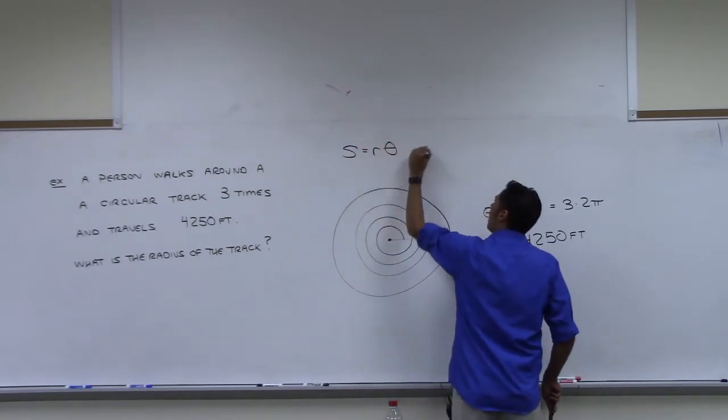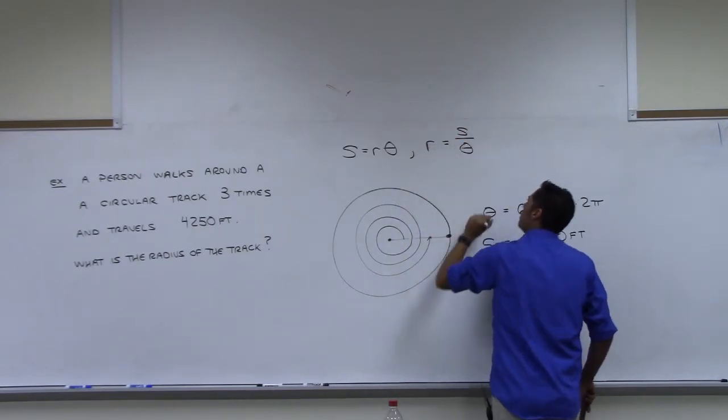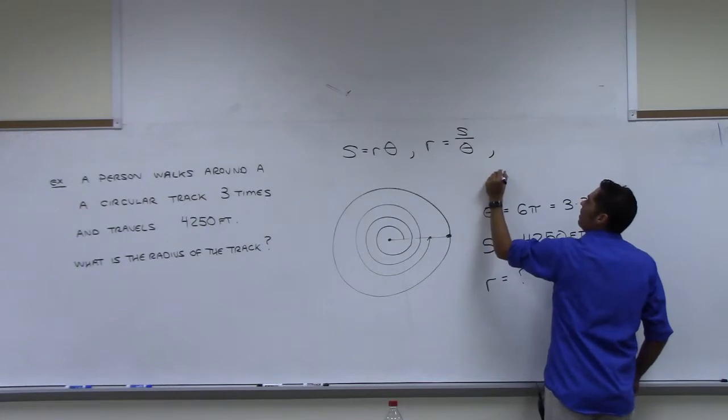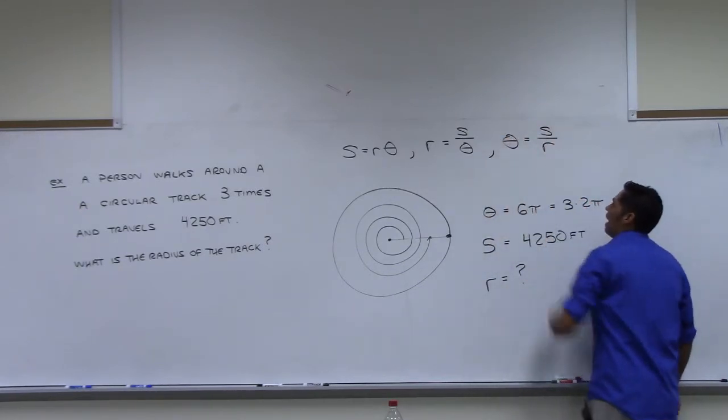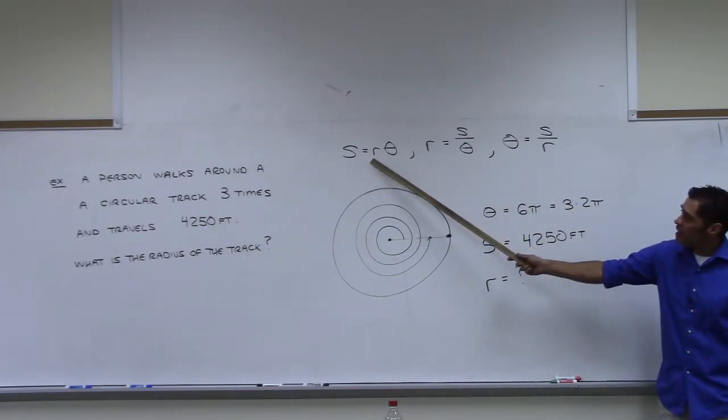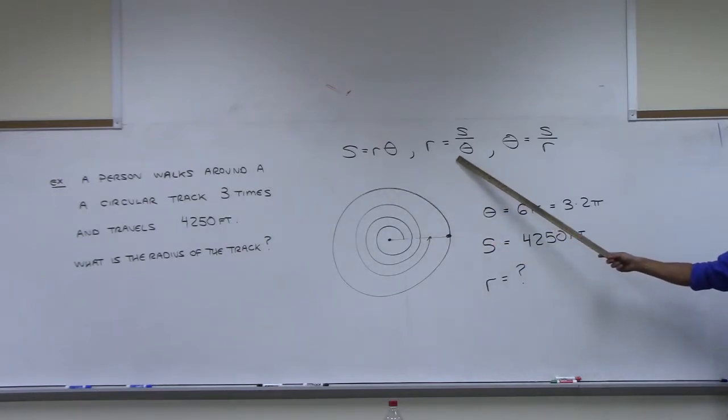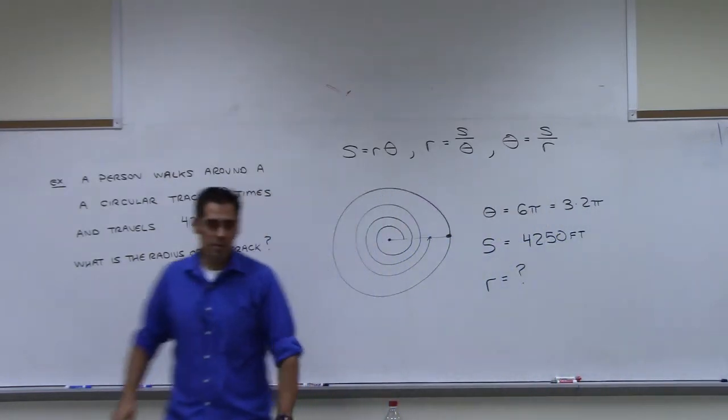The formula that we have from the theorem is that S is R theta. Please recognize that if you divide both sides by theta, the formula becomes that. And if you divide both sides by R, the formula becomes that. So there's three equivalent forms of that equation. If you isolate S, it's this. If you isolate R, it's this. If you isolate theta, it's this.